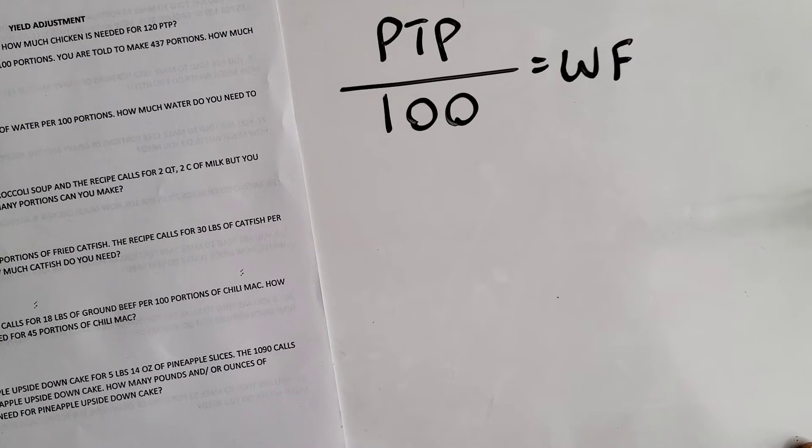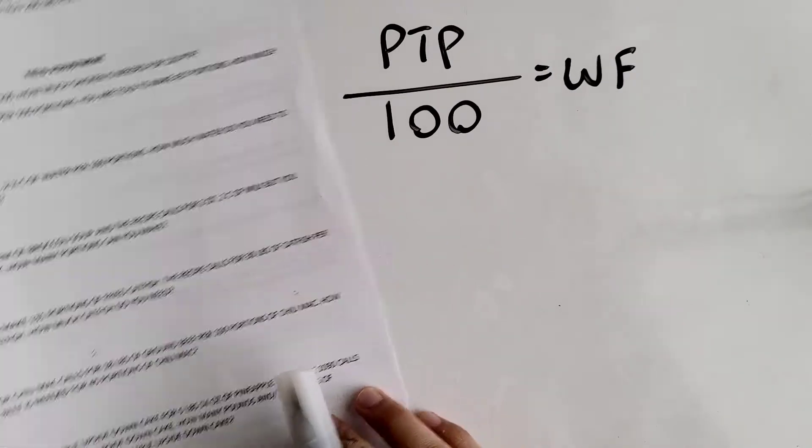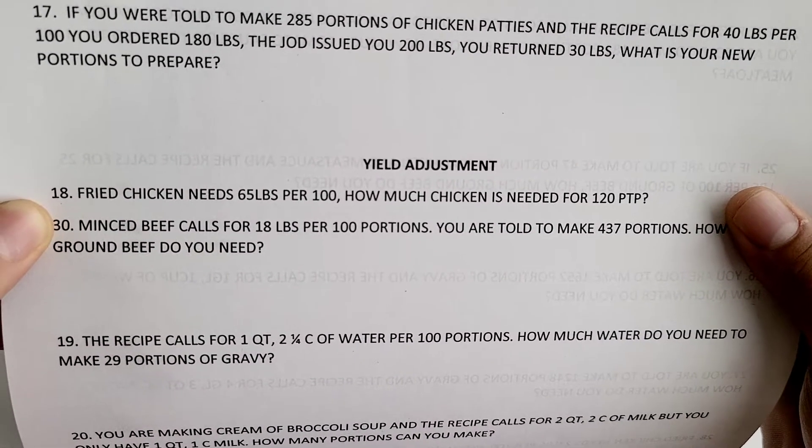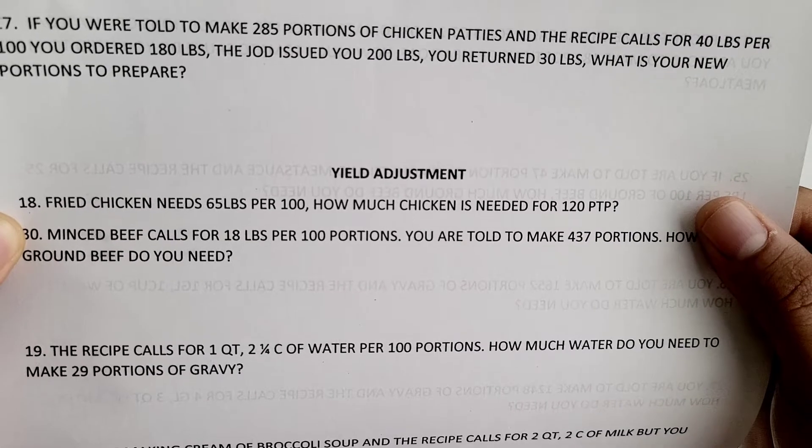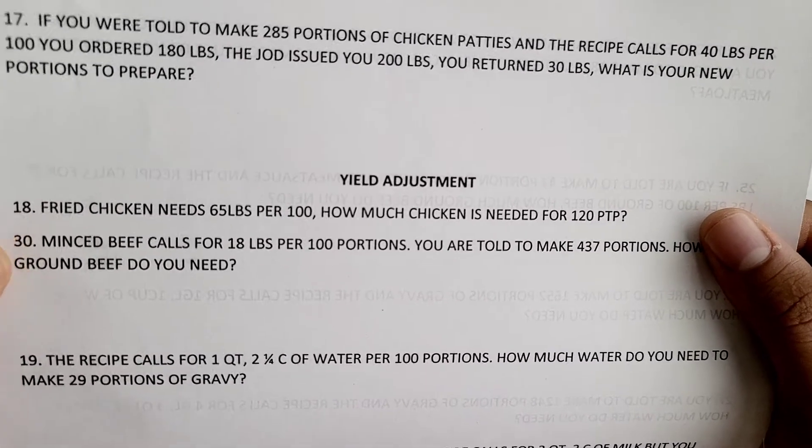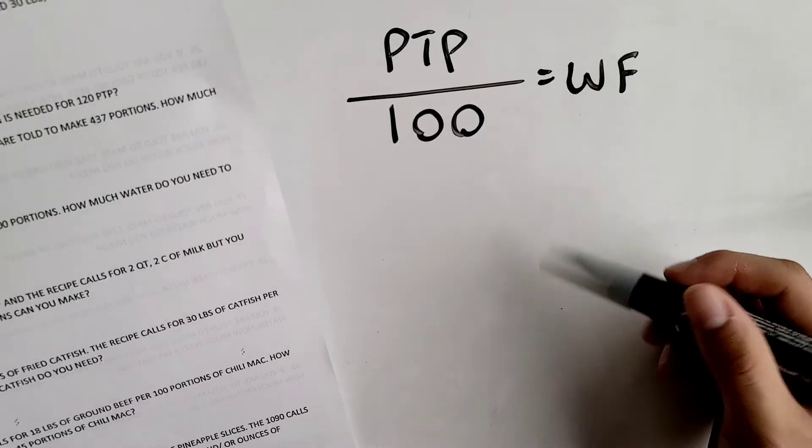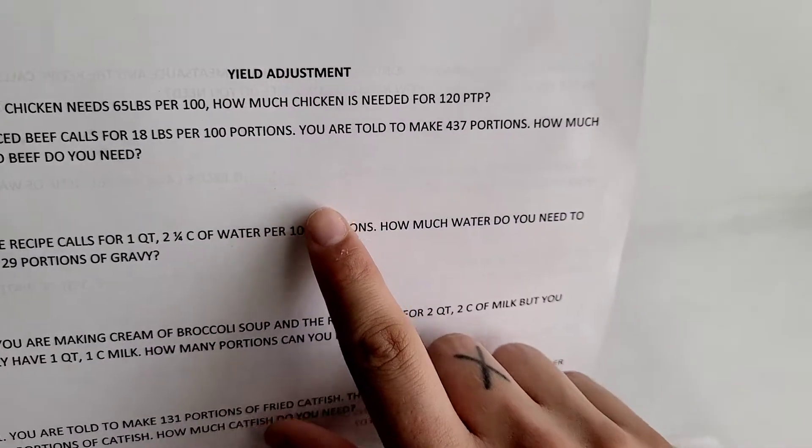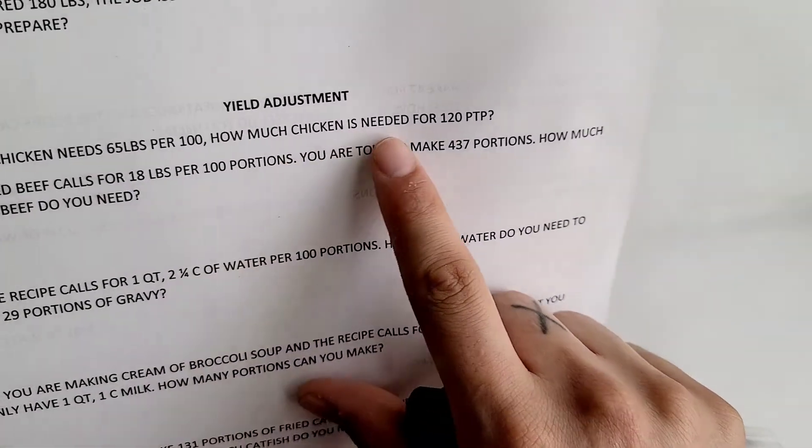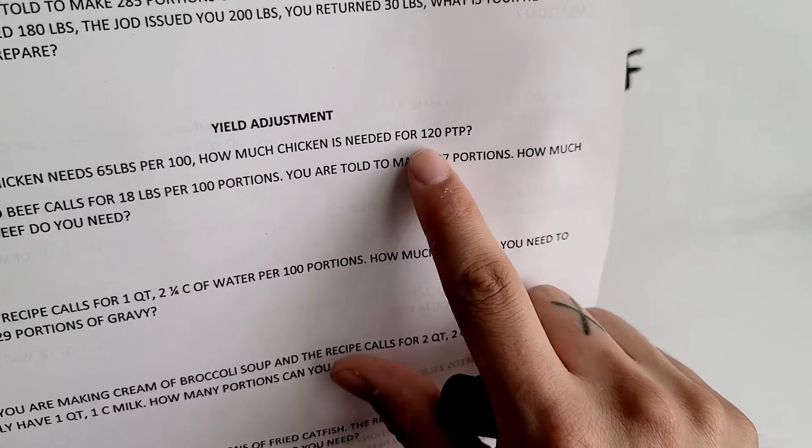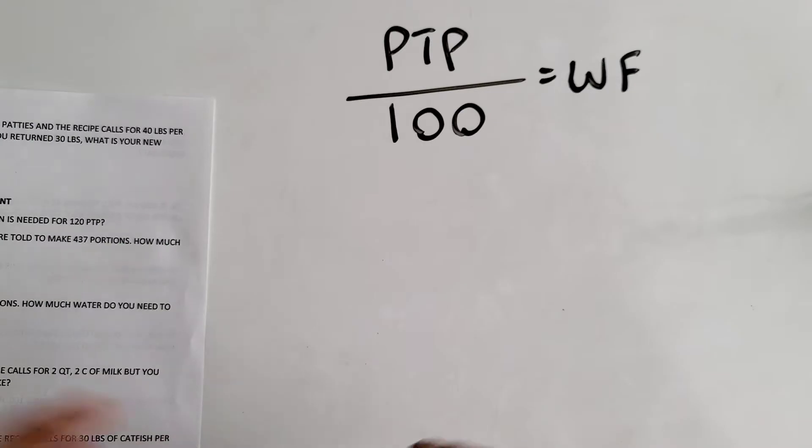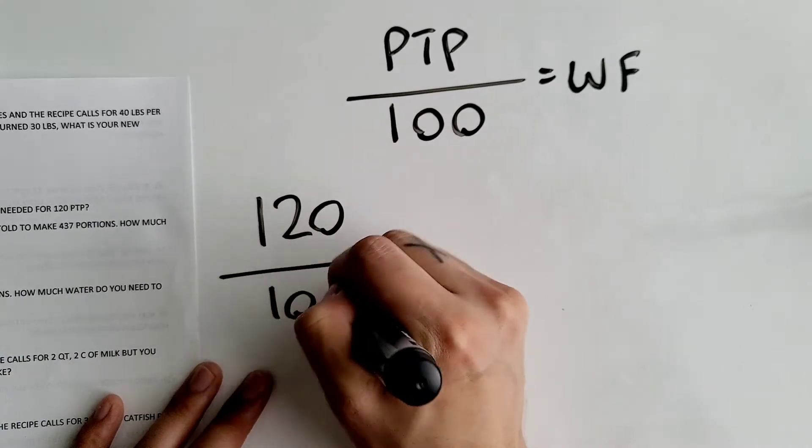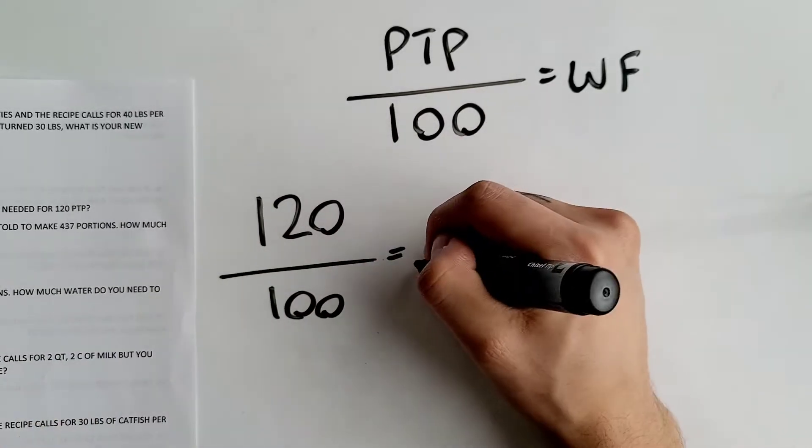This first question, number 18, says fried chicken needs 65 pounds per 100. How much chicken is needed for 120 portions? You always want to find your working factor first using this formula. Your portions to prepare are 120, so you divide 120 by 100 to get your working factor.